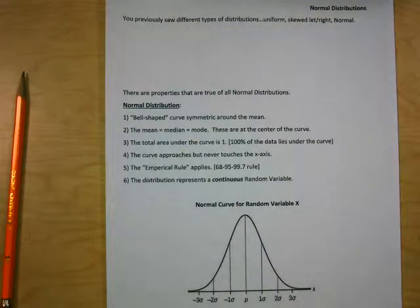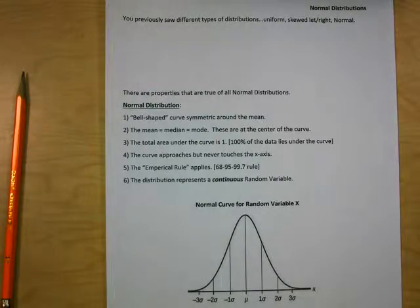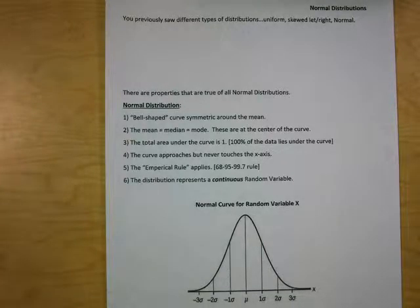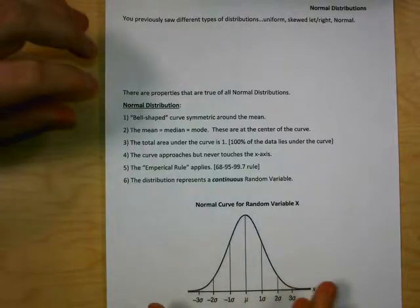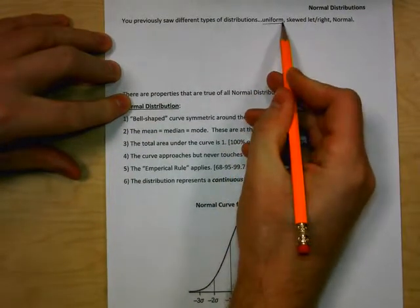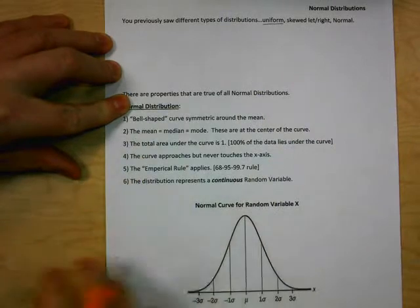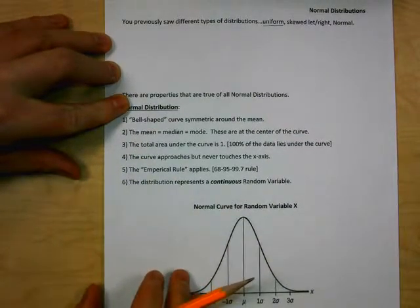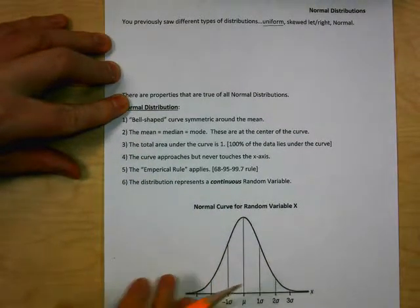What we previously looked at in earlier chapters was different types of distributions and the shapes of them: uniform distribution, skewed left, skewed right, and normal. Now we're going to focus on normal distributions, but just to refresh your memory — a uniform distribution is when all the data values appear the same amount of times, so the data is uniform throughout.